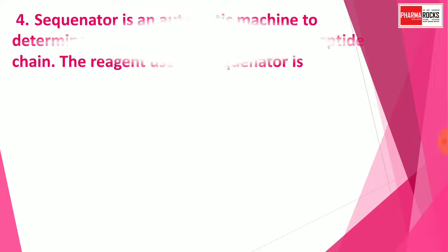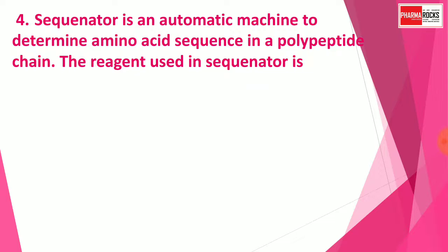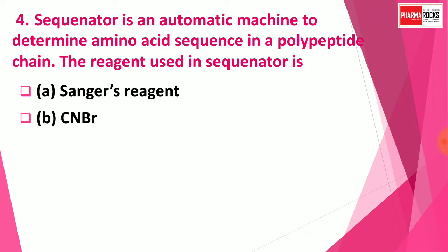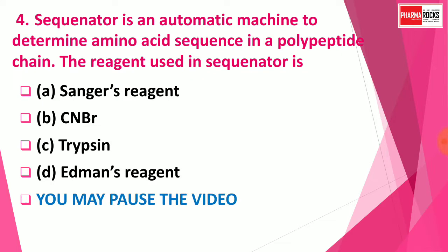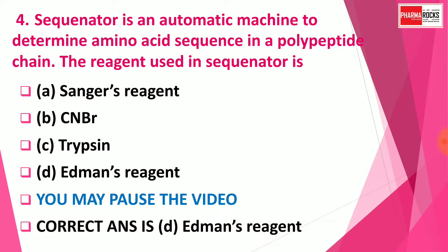Question number 4: A sequenator is an automatic machine to determine amino acid sequence in a polypeptide chain. The reagent used in a sequenator is — Option A: Sanger's reagent, Option B: CNBr, Option C: Trypsin, Option D: Edman's reagent. The right answer is Option D: Edman's reagent.